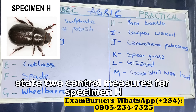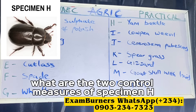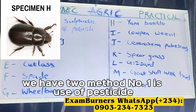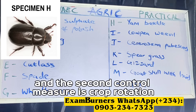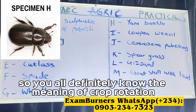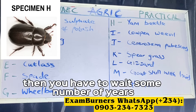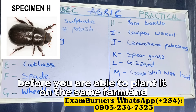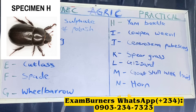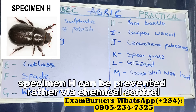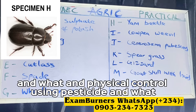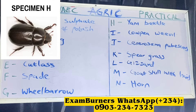State two control measures for specimen H. We have two methods: number one is chemical control — use of pesticide; and the second control measure is crop rotation. Crop rotation is where you plant a crop on a farmland and then wait some number of years before planting it on the same farmland again. So specimen H can be prevented via chemical control using pesticide and physical control using crop rotation.